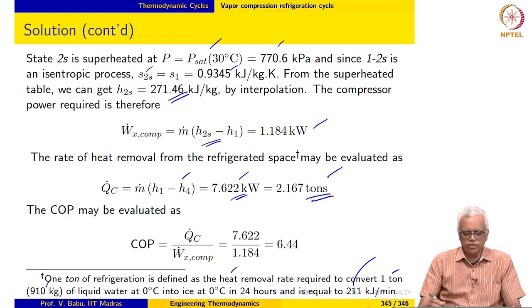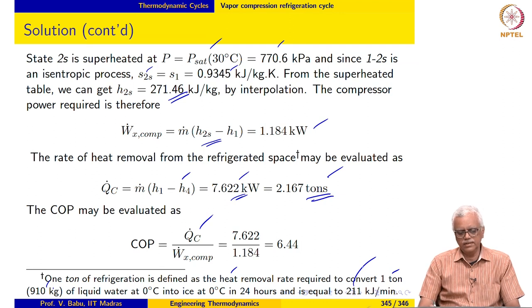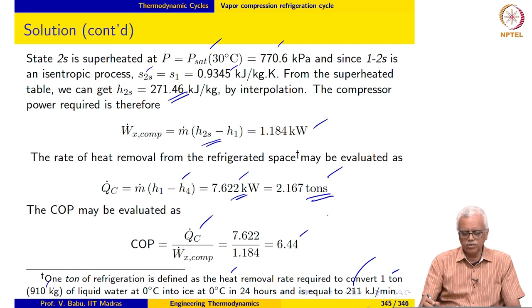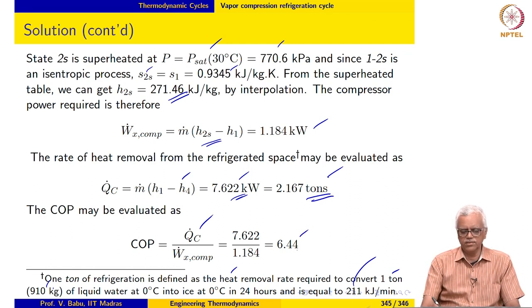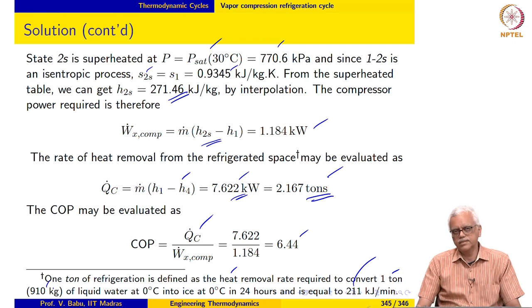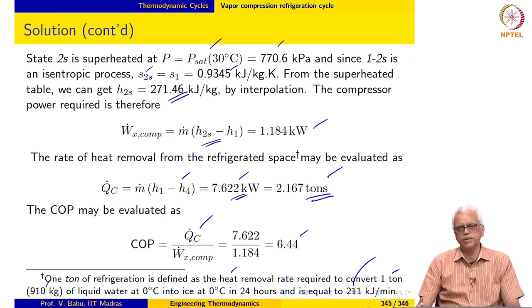And the COP for the cycle, you may recall is defined as QC dot divided by W compressor and that comes out to be 6.44 for the ideal refrigeration cycle. This is somewhat high because the compression process is taken to be ideal. Practical cycles will have COP values much less than this.